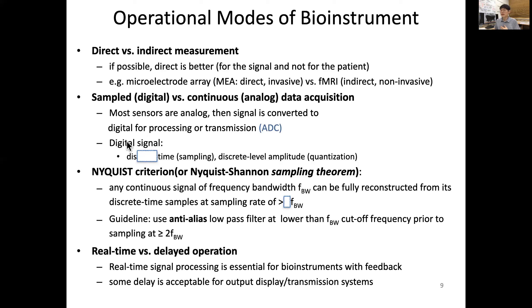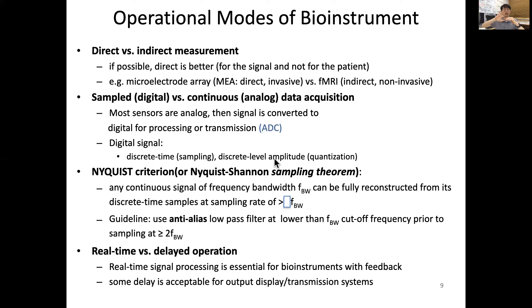For a digital signal, there are two aspects to consider. First, in terms of time, it is a discrete time signal — we call this sampling. Time itself is continuous, but for our purposes we sample so that we only capture data at meaningful time intervals. Second, in terms of the quantity of the signal, we use discrete level amplitude, which we call quantization. Even the amplitude is an analog quantity, but for digital processing we must quantize it. Here is an example.